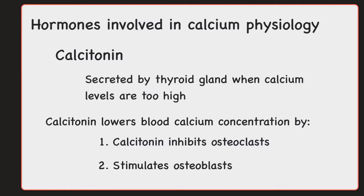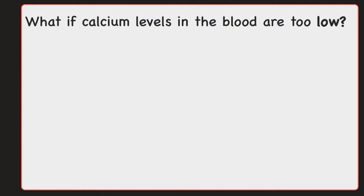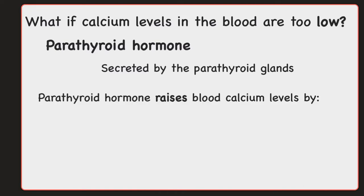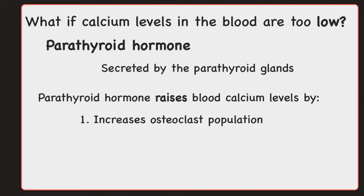What about when calcium levels are too low? When calcium levels are too low, parathyroid hormone is going to be secreted by the parathyroid glands. This hormone is going to raise blood calcium. So the stimulus is that blood calcium is too low, parathyroid hormone will be released, and its ultimate goal is to raise calcium blood levels. It does so by four different mechanisms. The first one is that it increases the osteoclast population. Osteoclasts are responsible for breaking down the bone and releasing both calcium and phosphate into the blood. So if we increase the osteoclast population, we're going to increase breaking down that bone and increase calcium levels in the blood.